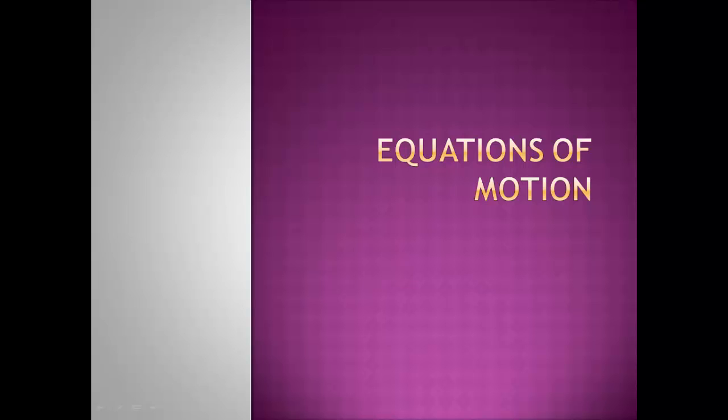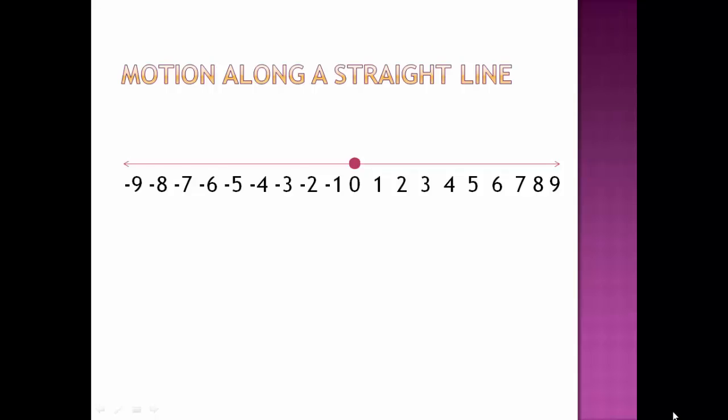Before moving on to the derivation part we shall first revise motion along a straight line. Consider the x axis, we have the origin over here. Any particle that moves along the right side is motion along positive x axis and along left side we consider it as along negative x axis.